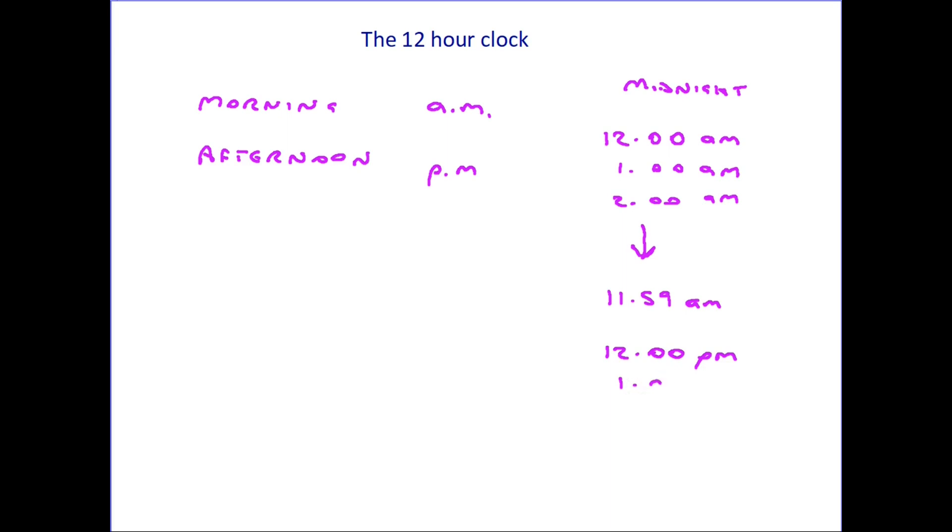And so the clock starts again, 1 o'clock, but this time it is PM, 2 o'clock, and so on throughout the afternoon and evening. Once again, we get to 11:59 PM. And we have reached the end of our day, because as soon as the clock goes back to 12 o'clock, we are back to 12 o'clock in the morning.